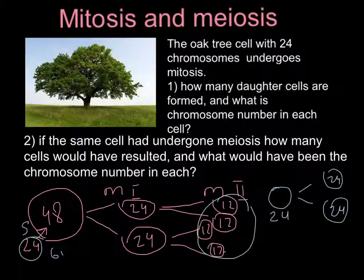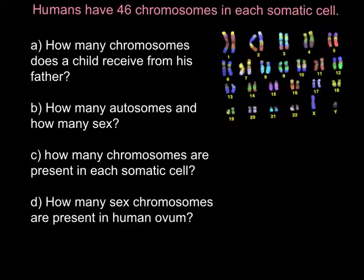On the next slide I will show a different example using the human genome. The statement is: humans have 46 chromosomes in each somatic cell. You may try to answer the four questions on the left with the help of the picture shown, or you may proceed with my explanation.